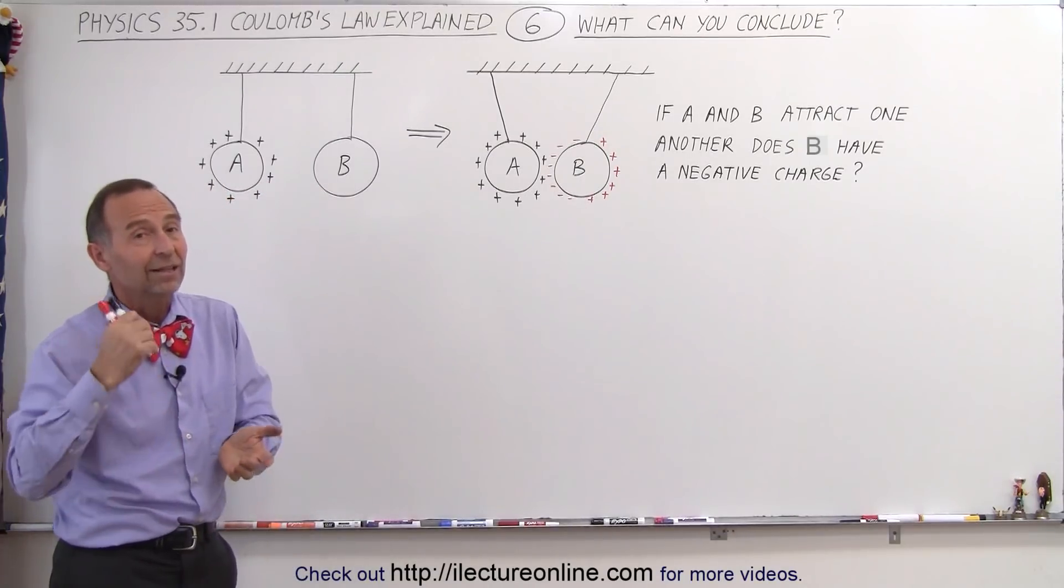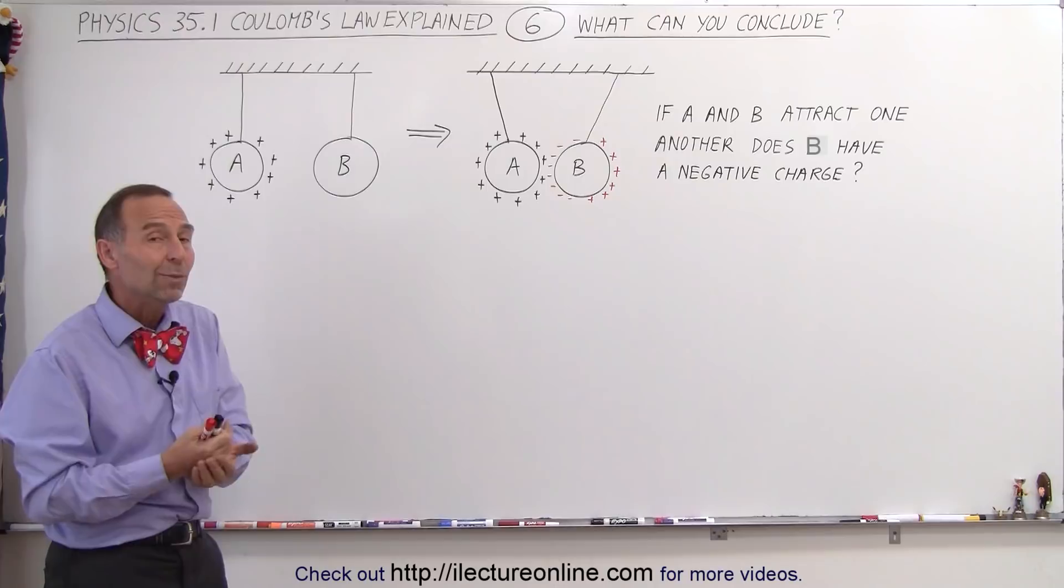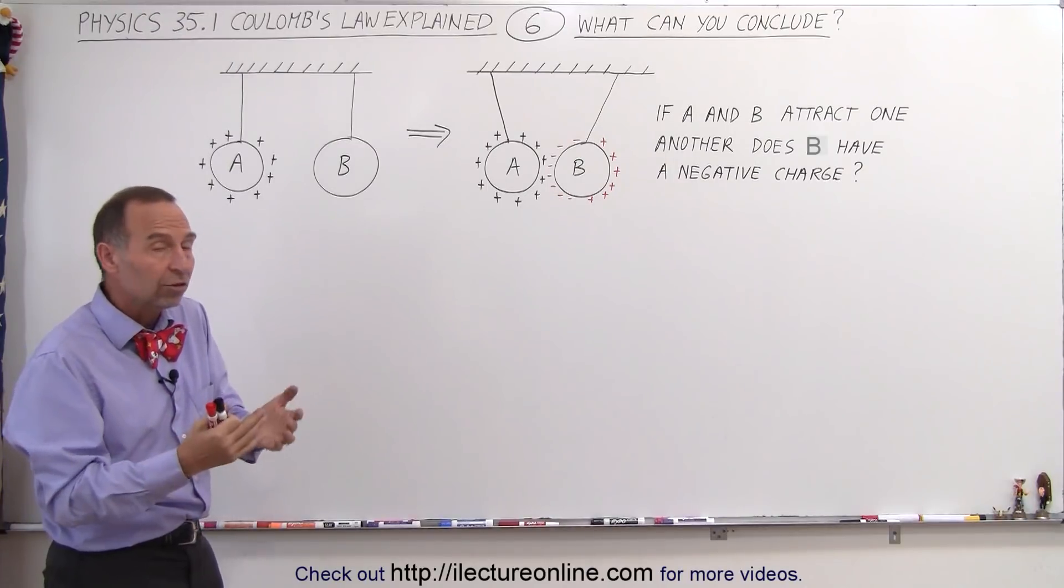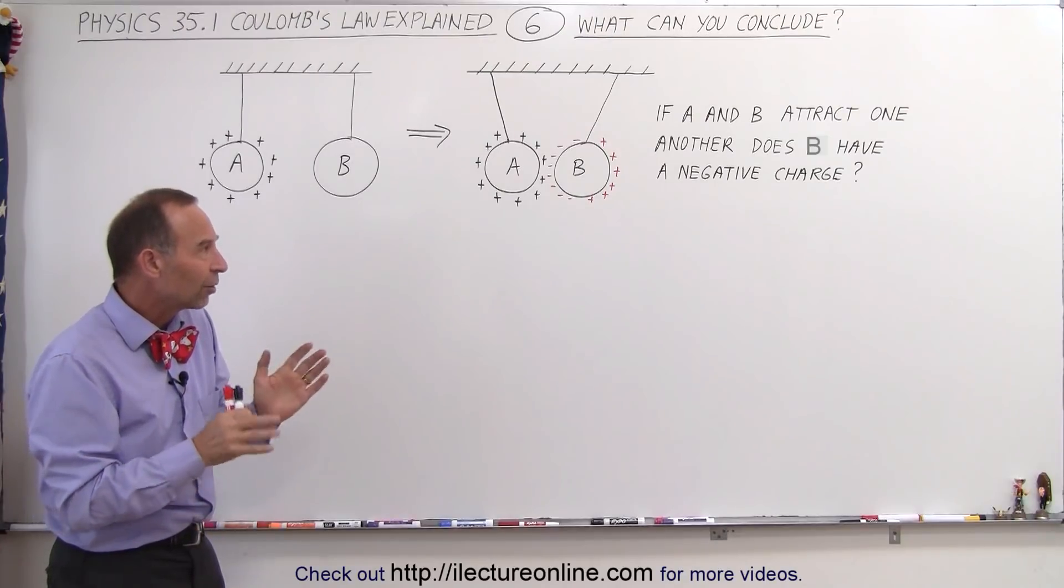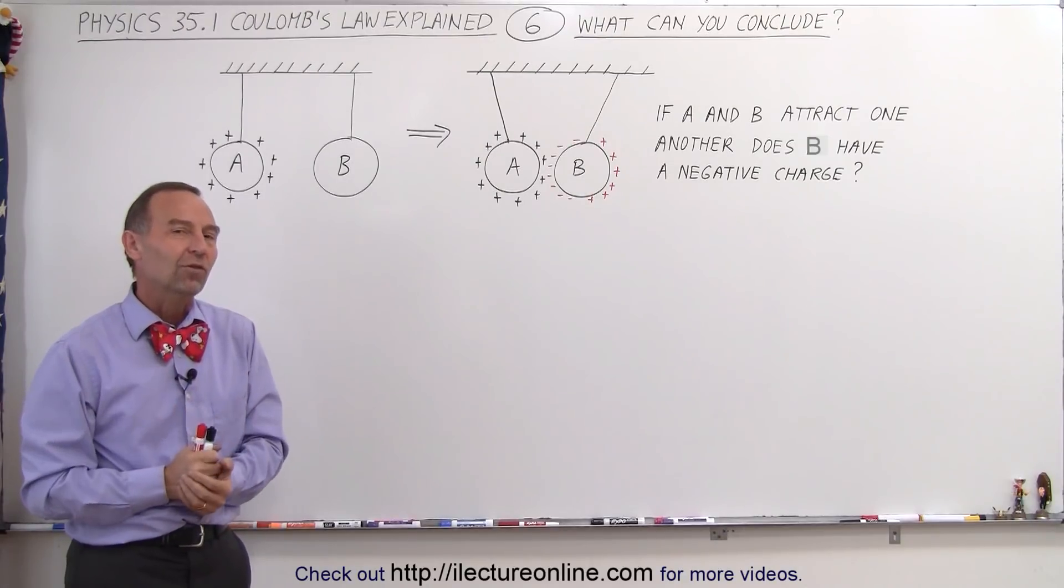So the answer is, not necessarily. B can either be negatively charged or neutral, but as a conductor, the charges will move, reapportion themselves on different locations, and there will be a force of attraction.